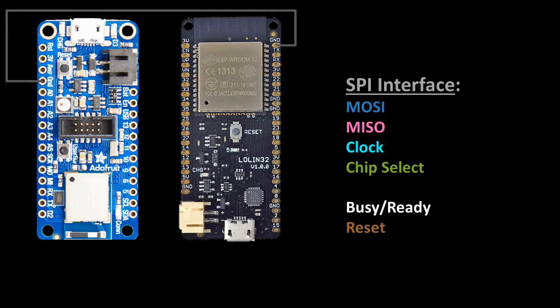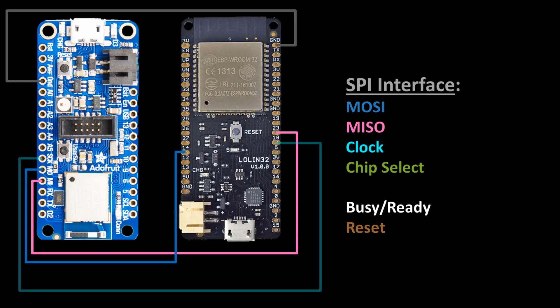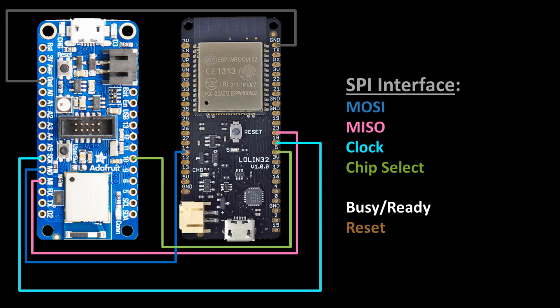A ground on the NRF52840 is connected to a ground on the ESP32. The MI (MISO) pin on the NRF52840 is connected to GPIO23. MO (MOSI) is connected to GPIO14. SCK (Serial Clock) is connected to GPIO18. GPIO10 is connected to GPIO5 for chip select. GPIO11 is connected to GPIO33 for busy/ready. GPIO12 is connected to EN (enable), which allows for resets. Finally, the NRF52840 USB pin is connected to 5V on the ESP32, providing 5V power from the USB bus.